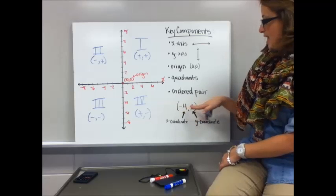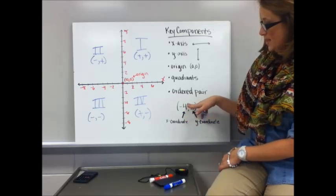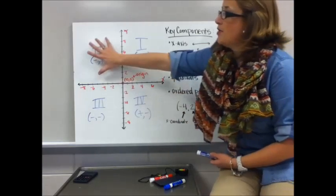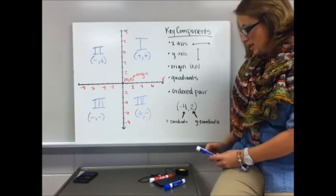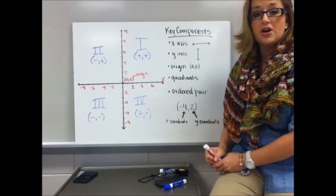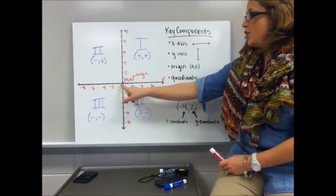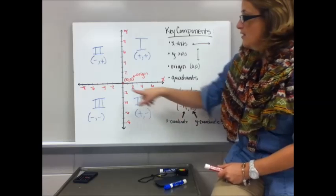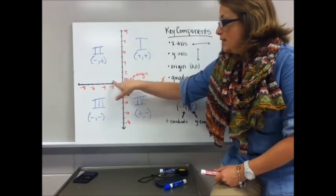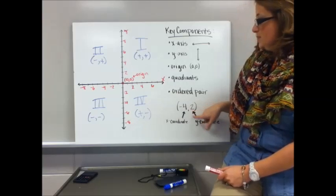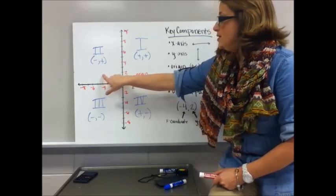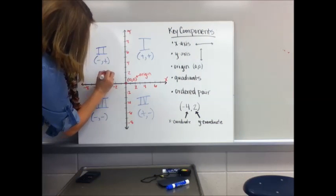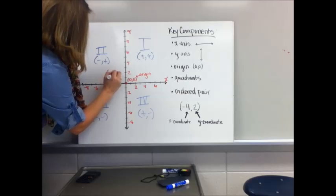So let's look at the ordered pair negative four, positive two. Negative four is the x coordinate. Two is the y coordinate. Since it's a negative and a positive, I already know that it's going to fall in quadrant two. So let's go about graphing it. You're going to start at the origin. You're going to move with the x coordinate first because x comes before y in the alphabet. I'm going to move to negative four, so I go left four. One, two, three, four. And then I'm going to go up two since it's positive, and that's the y coordinate. One, two. So my point goes right here. And you can label that point negative four, two.